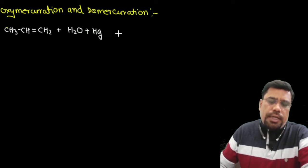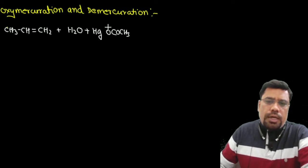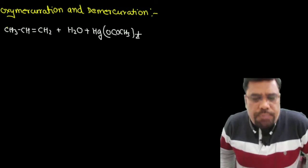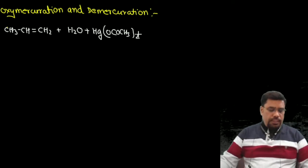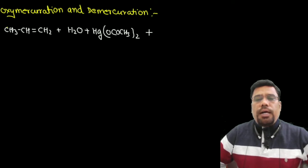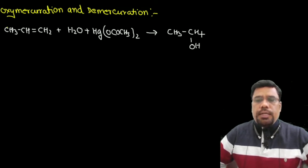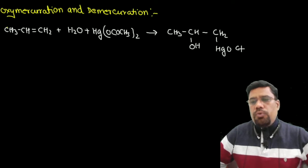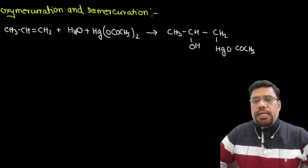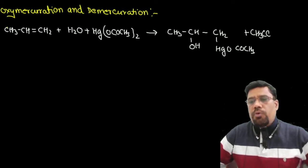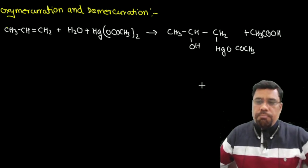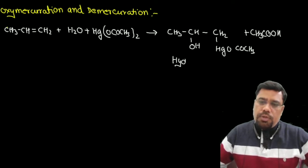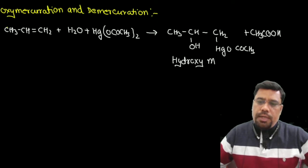Propene लिया और उसमें mercuric acetate Hg(OCOCH3)2 को water के साथ add किया। Add करने के बाद compound बना: CH3-CH(OH)-CH2-Hg(OCOCH3)। एक CH3 यहाँ से release हो जाएगा। इस compound का नाम है hydroxymercurial compound — hydroxy हो गया और mercurial compound हो गया।